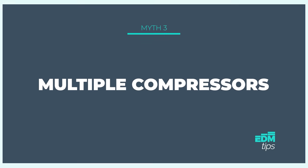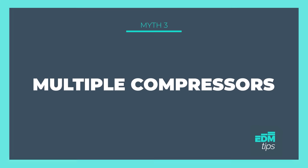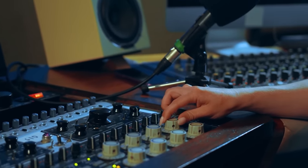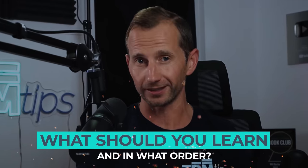That brings me to myth number three: you need loads of different compressors to sound professional. Music production is complicated, and one of the biggest blocks to learning it is overwhelm. Where you don't start is on the subtle differences between UAD, Waves, and Black Rooster Audio versions of the classic 1176 compressor versus remakes of the 2A or 3A. You can do everything you need with just three types of compressor, and your stock plugins are absolutely fine.